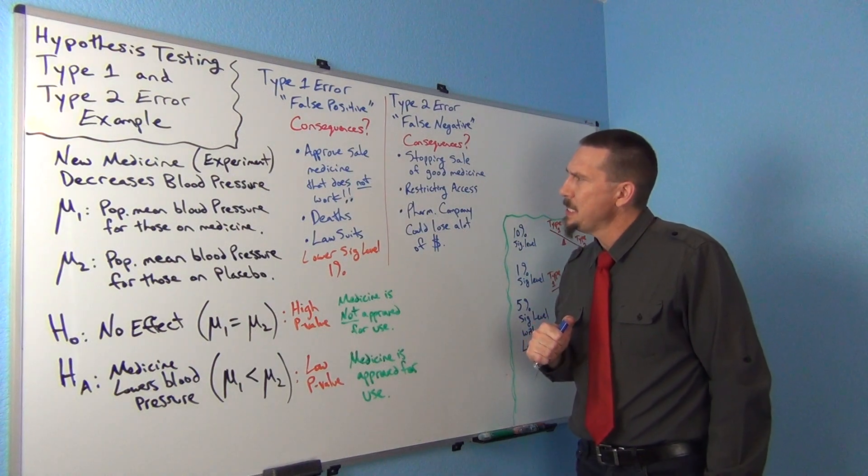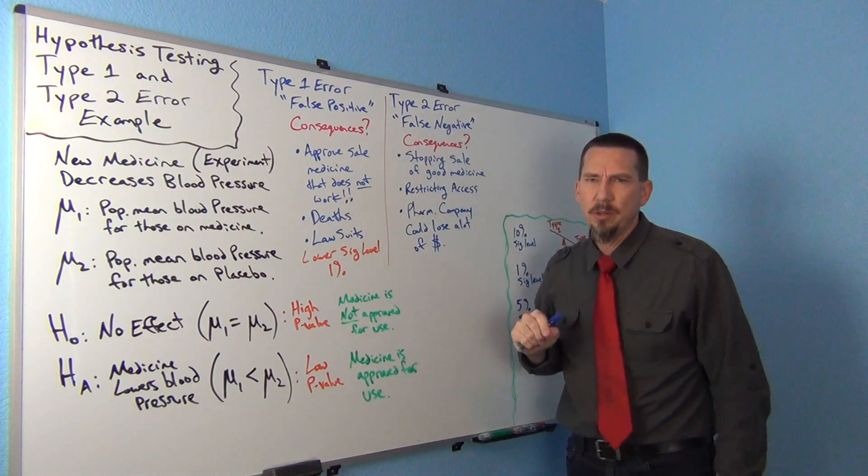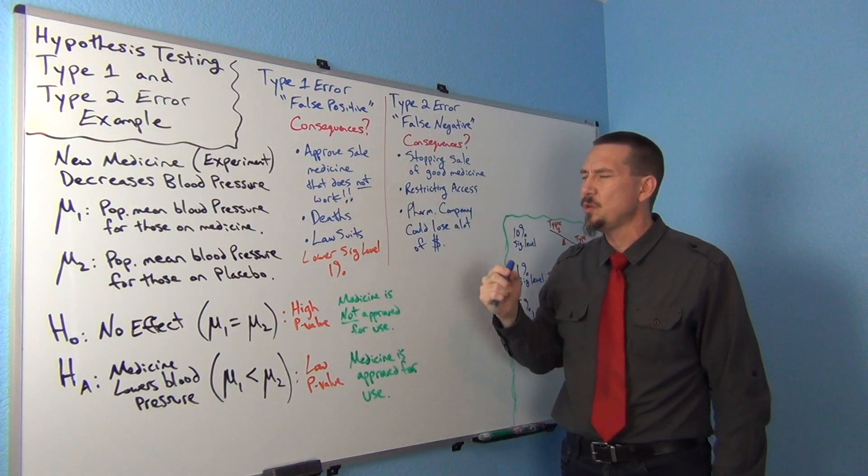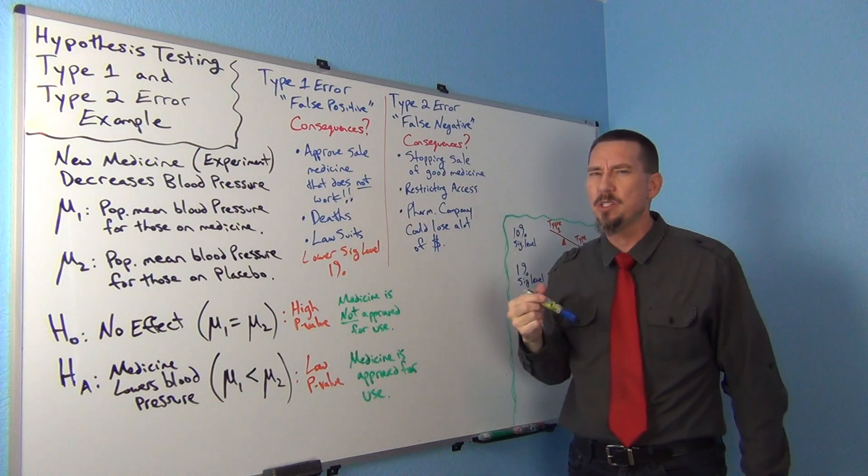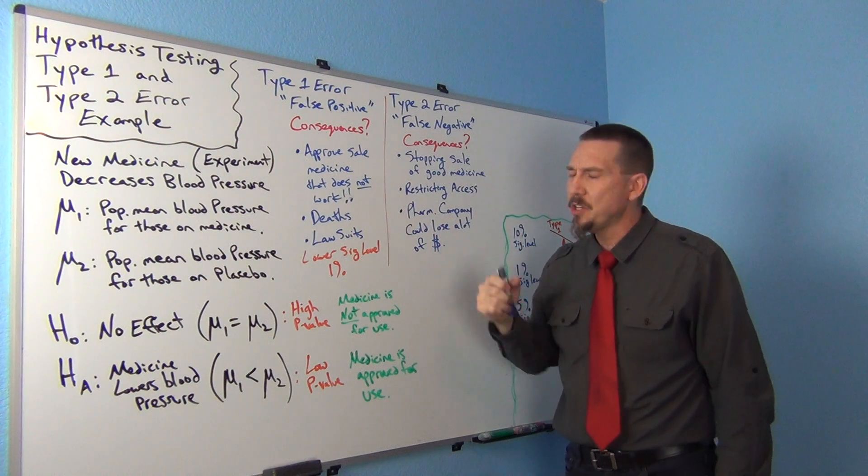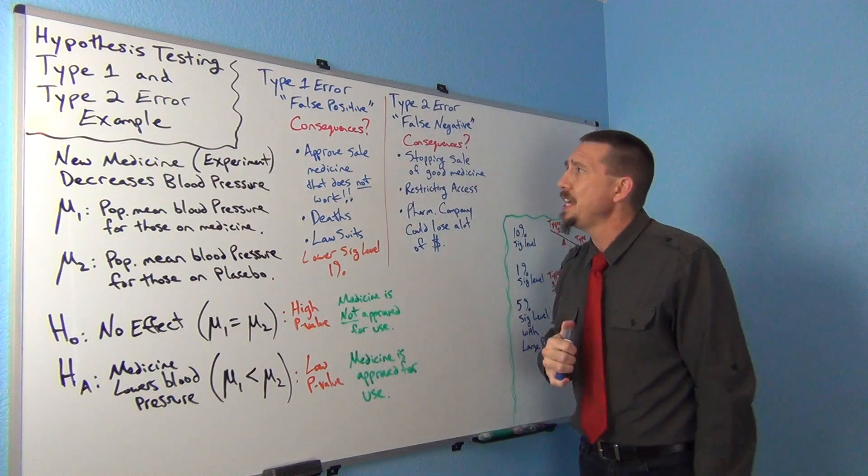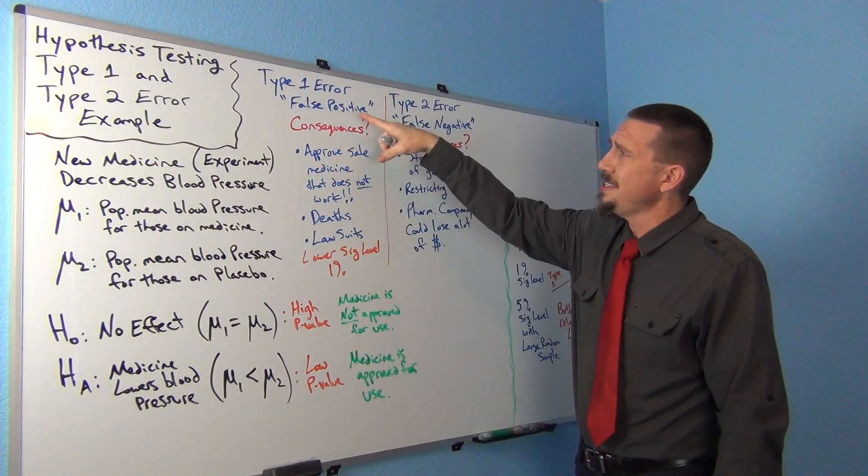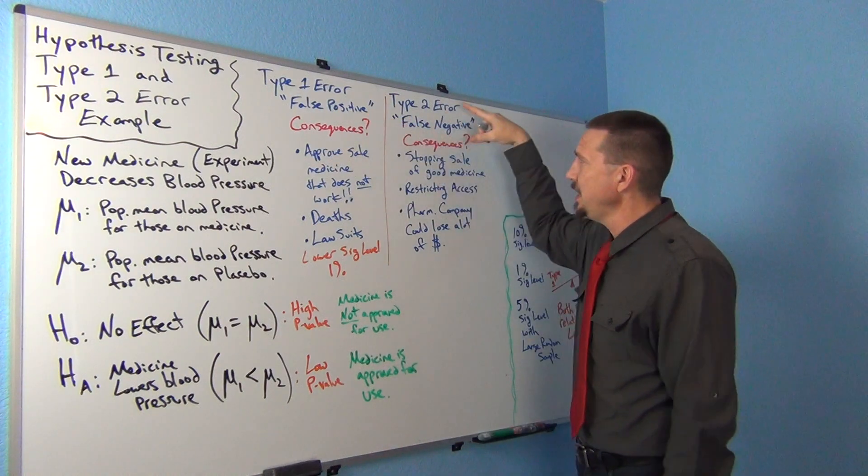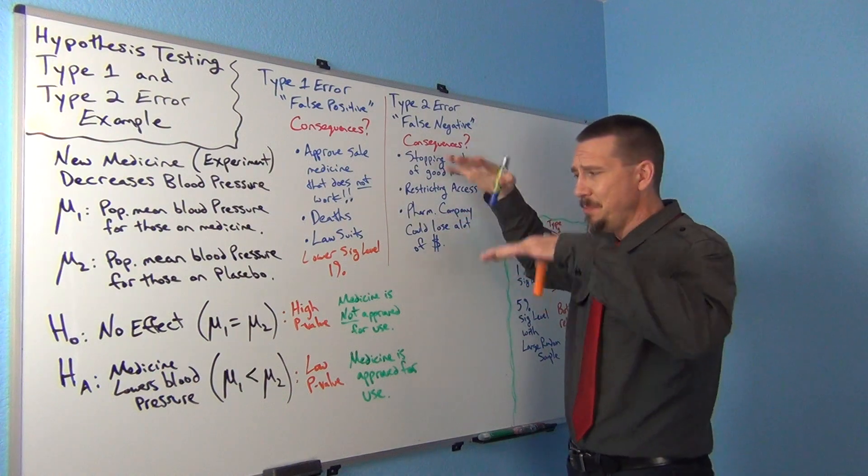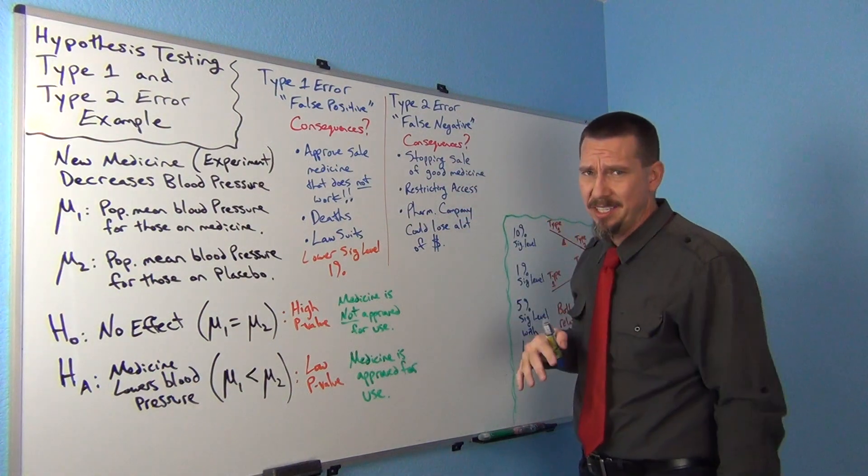So when I look at these two errors now, a statistician has to think through these errors and say, well, which one's worse? If they're sort of equally bad, I might stay with a 5% significance level. If I think the Type 1 error is worse, or the Type 2 is worse, I might start to make adjustments to my significance level.